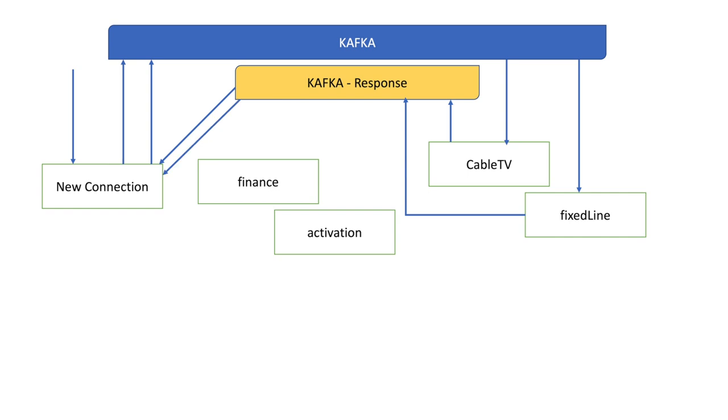Cable TV says it's good with this customer and publishes back to the new connection service. Fixed line also says it's okay. Everyone is listening to the topic but others don't act. Then the system publishes that this new connection has passed the verification stage. That message goes to finance, which deducts the payment and sends another message to Kafka, which is picked up by both activation and new connection.